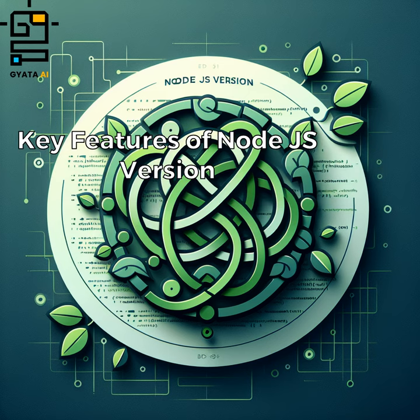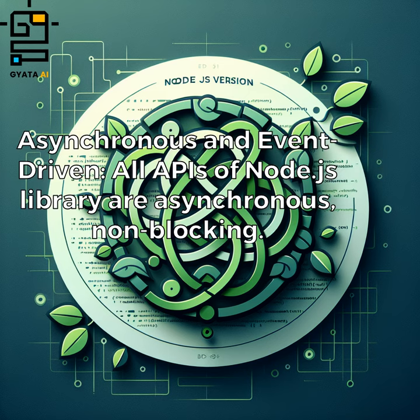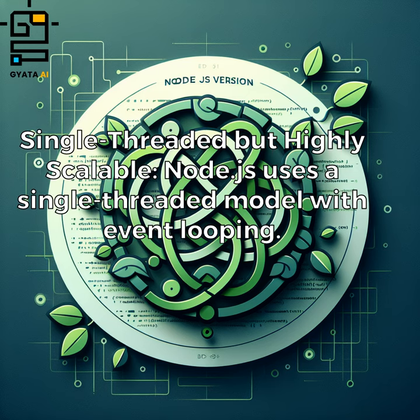Key features of Node.js: asynchronous and event-driven — all APIs of the Node.js library are asynchronous and non-blocking. Node.js also uses a single-threaded model with event looping, making it highly scalable.